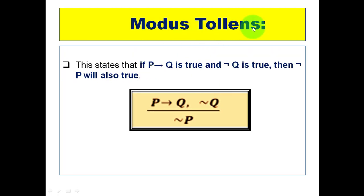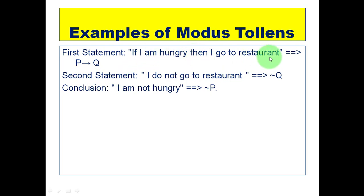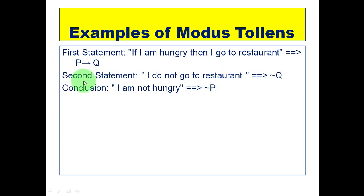Next is modus tollens. It states that if P implies Q is true and negation of Q is true, then negation of P will also be true — written as: P implies Q, negation of Q, divided by negation of P. Using the same example: 'If I am hungry then I go to the restaurant.' If negation of Q is given — 'I do not go to the restaurant' — then the conclusion is 'I am not hungry,' which is negation of P.